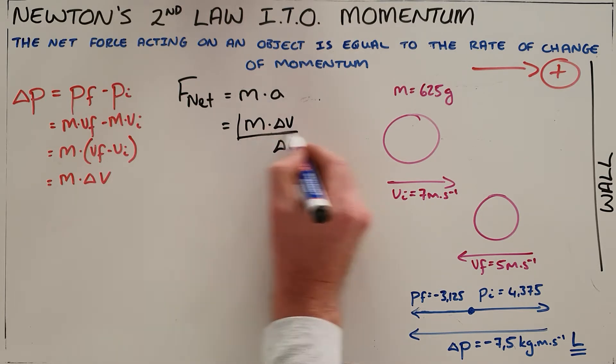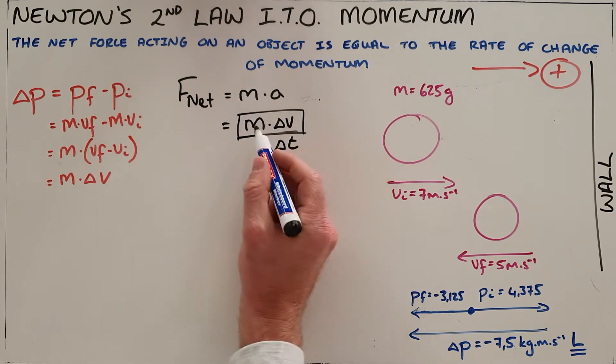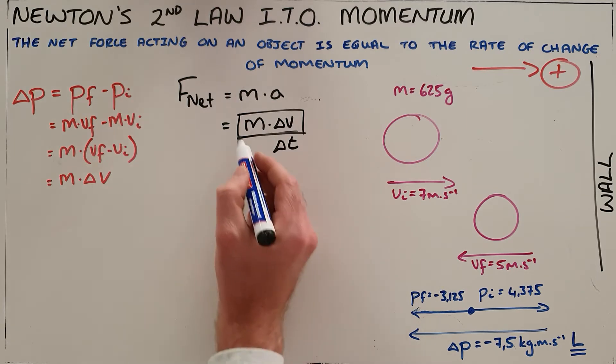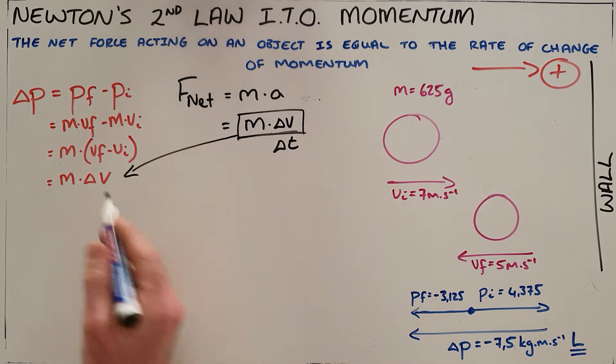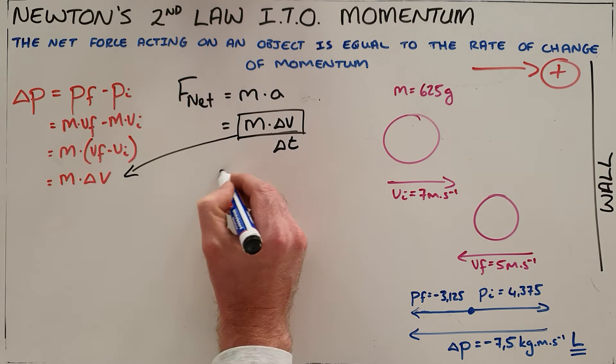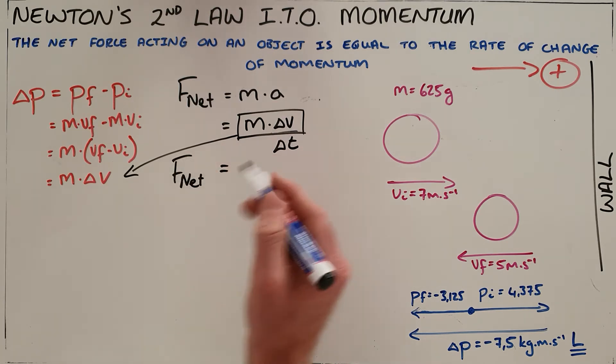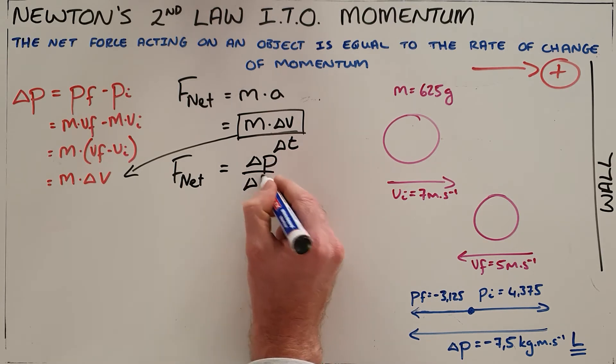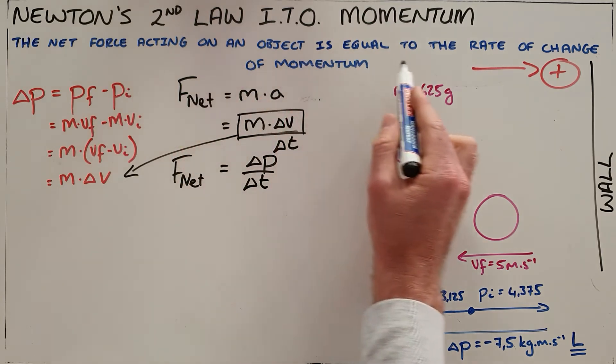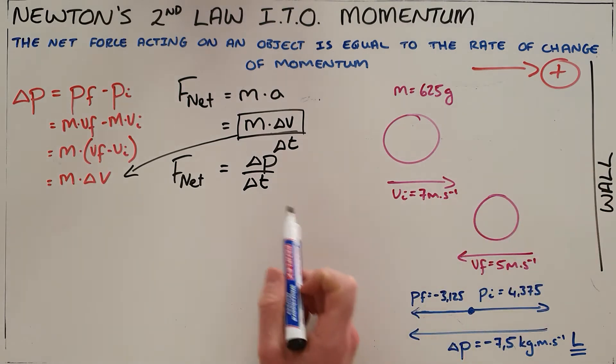And from that, we can see that this term, mass multiplied by change in velocity, can also be substituted for change in momentum, which gets us to Newton's second law in terms of momentum, that tells us that the net force acting on an object is equal to the rate of change of momentum.